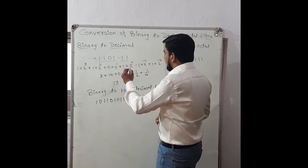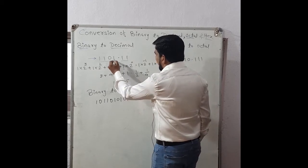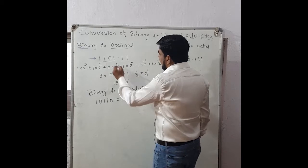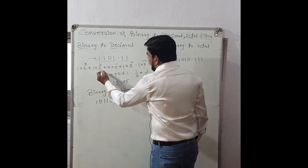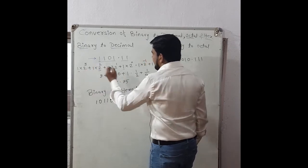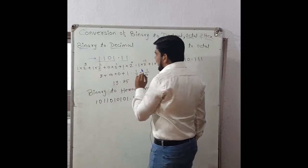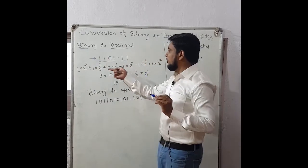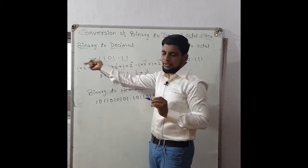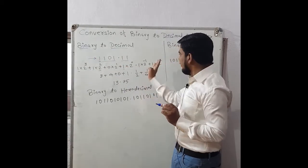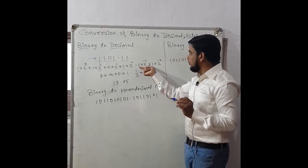Whatever binary bits are given, we take each bit and multiply it by 2 raised to the appropriate power. The rightmost bit (1) is multiplied by 2 raise to 0, then 0 into 2 raise to 1, then 1 into 2 raise to 2, and the last 1 into 2 raise to 3. We multiply the coefficients of binary digits with 2 raise to n.